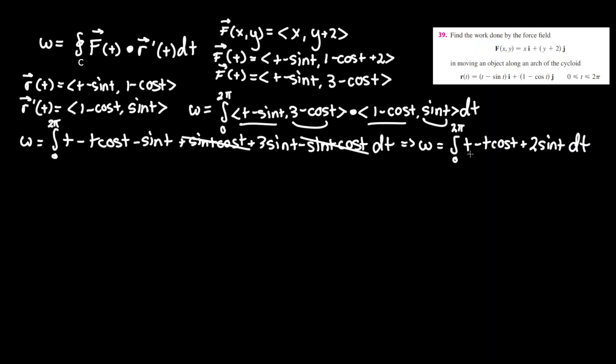And now we're going to have to evaluate this integral. Separating it will make it a little easier to understand, where we take work equals integral between 0 and 2pi of t dt minus the integral of 0 and 2pi of t cosine t.